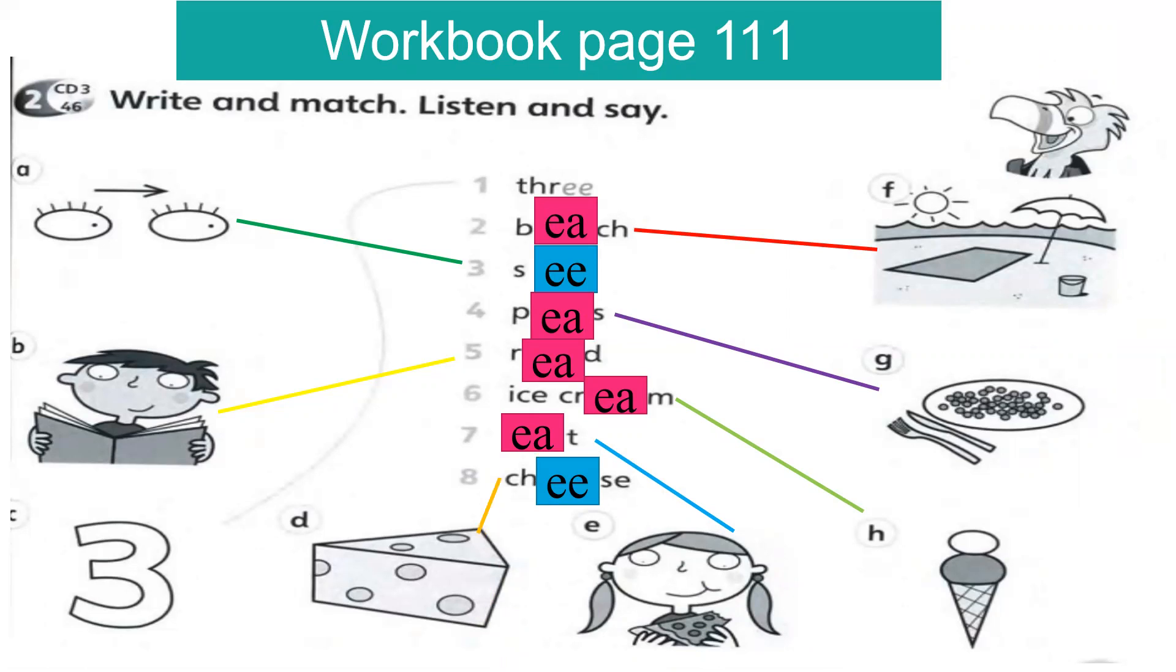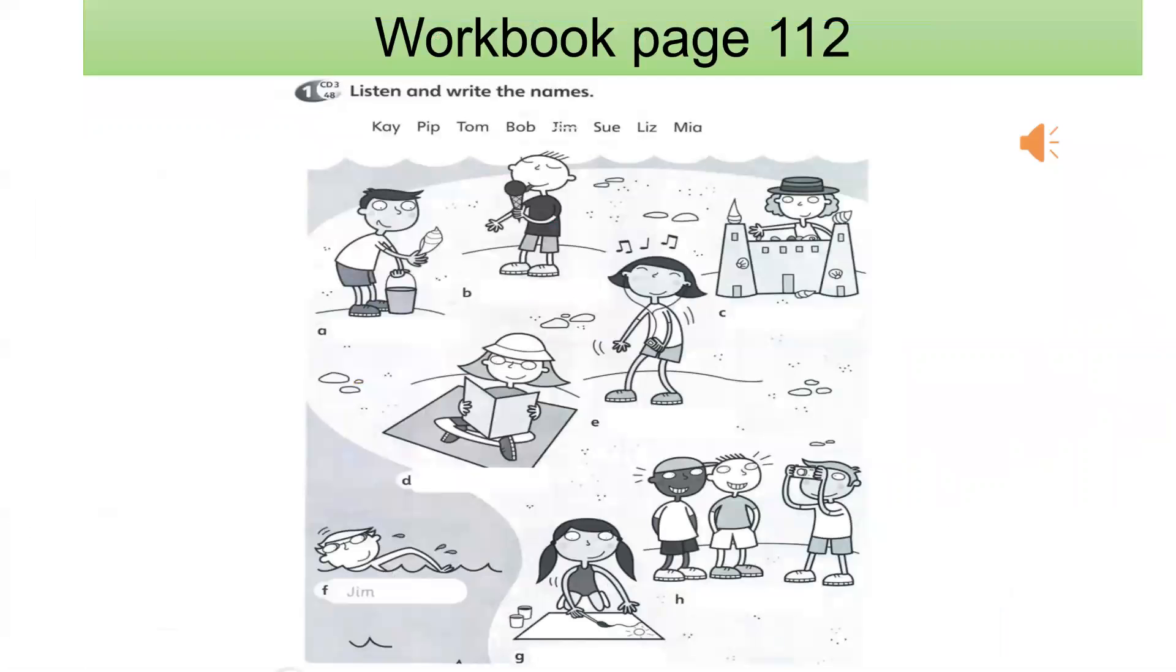So boys and girls, you managed to get along with me. Let us continue with workbook page 112. You have to listen and write the names. Boys and girls, listen carefully. Let us begin now. Workbook page 112, listen and write the names. What a lot of people on the beach. Jim's in the sea, he's swimming. He's a good swimmer.